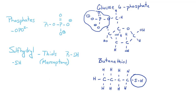And the last one is a sulfhydryl group — these are called thiols or mercaptans. An example is butanethiol: four carbons, sulfur, hydrogen. Thiols are sulfur-containing groups. Think of it as a sulfur alcohol.